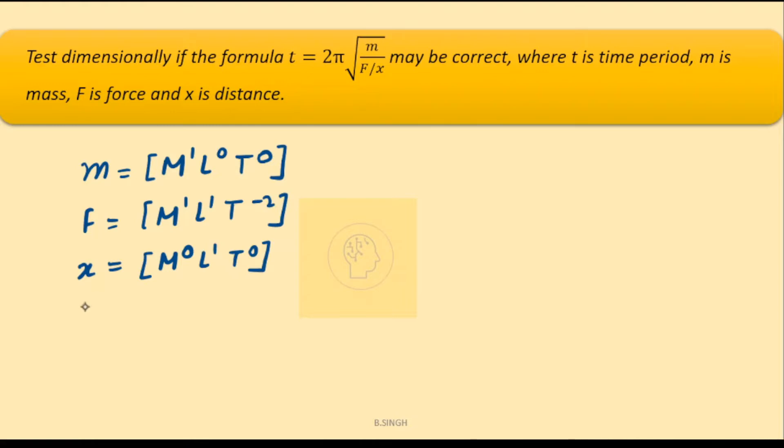On the left hand side, the time period has dimensions t equals m0, l0, t1. Now let's put it in the equation.